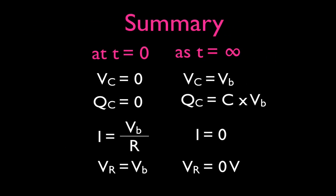So those are the two cases. At time equals zero, right after the switch is closed: the voltage on the capacitor is zero, the charge on the capacitor is zero, there is current equal to the battery voltage divided by total resistance — in this case 0.75 amps — and the voltage across the resistor equals the battery voltage. After a long time, it's the opposite: the voltage of the capacitor equals the battery voltage, we have charge found by Q equals C times V, there is no current, and the voltage across the resistor is zero.